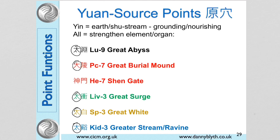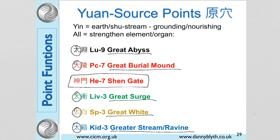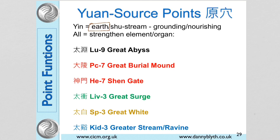For the Yin points we need to know all of their names, and they all have a character for 'great' in their name: Lung 9 is Great Abyss, Pericardium 7 is the Great Burial Mound, Liver 3 is the Great Surge, Spleen 3 is Great White or Great Clarity, and Kidney 3 is Great Stream or Great Ravine. The exception — which I'll explain later — is Heart 7, which is called Shenmen or Spirit Gate.